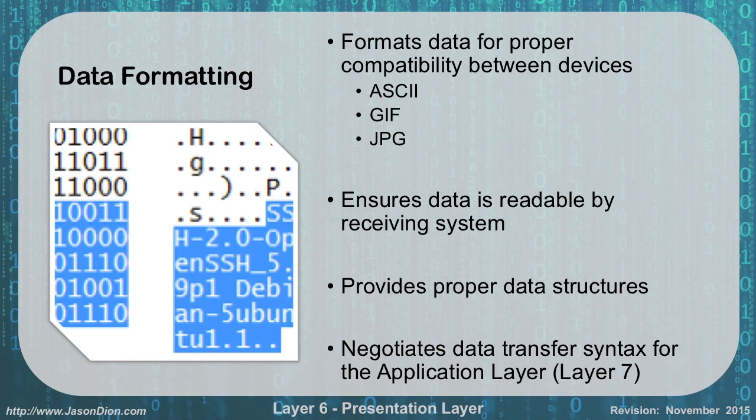So if I'm using something like ASCII, which is the American Standard Code for Information Interchange, it actually represents all of our alphabetic letters as a different binary code. For instance, the letter A is number 65 according to a computer, which is the binary equivalent of 65.